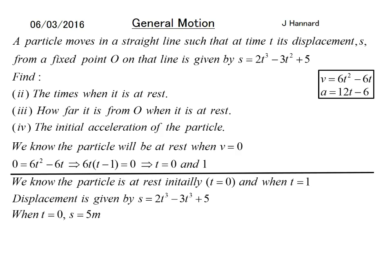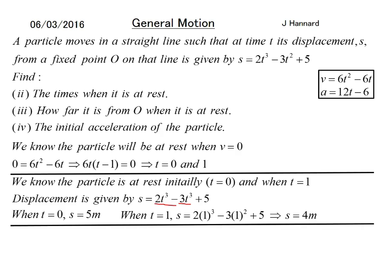When t = 0, s = 5 meters. That's pretty obvious because when t = 0, this dies and this dies and you're just left with 5. Well, when t = 1, s equals 2 times 1³ minus 3 times 1² plus 5, which is 4 meters.